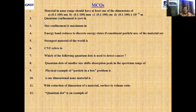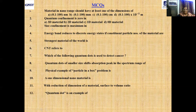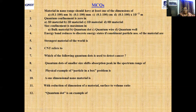Question 2: Quantum confinement is zero in — (A) three-dimensional, (B) two-dimensional, (C) one-dimensional, or (D) zero-dimensional material? Answer: In bulk, that is three-dimensional material. Question 3: Size confinement is maximum in — bulk material, quantum dot, quantum wire, or quantum well? Answer: Quantum dot, which is the zero-dimensional material.